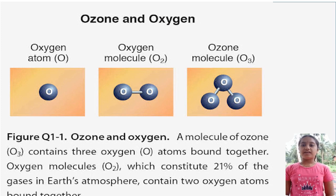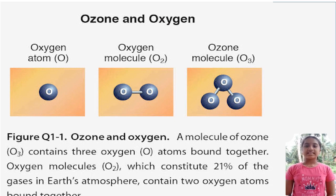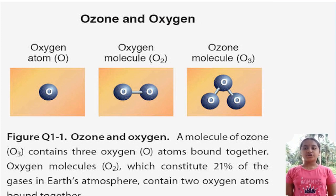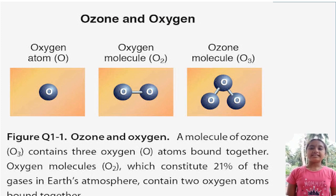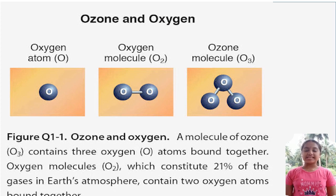Ozone, often referred to as O3, is formed when heat and sunlight cause chemical reactions between oxides of nitrogen, also known as NOx, and volatile organic compounds, also known as VOC, which are also known as hydrocarbons. Thank you.